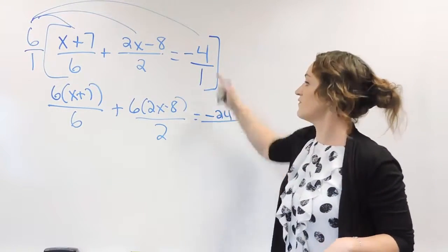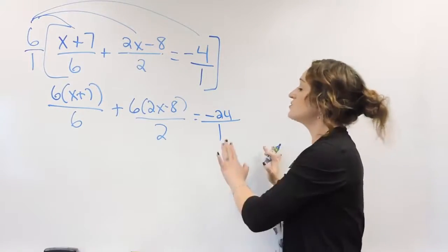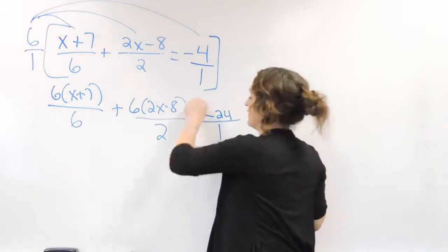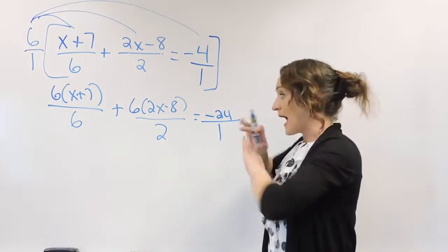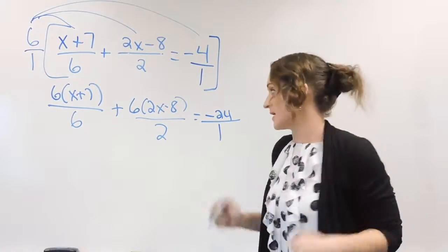Now what we want to do now is we want to simplify these fractions here, and we should be left with a whole number as long as we multiply by the correct common denominator.